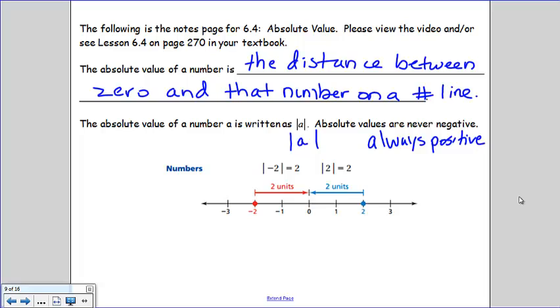That's because absolute values represent a distance. So they're always positive or 0.